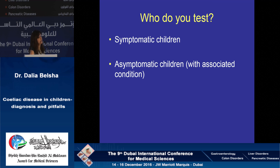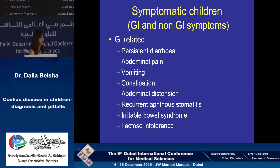Who do we test in kids with celiac disease? We test symptomatic children and asymptomatic children who have associated conditions that raise susceptibility for celiac disease. Symptomatic children is a very broad umbrella — each child with problems might be worth doing celiac disease serology for. From the GI perspective, symptoms include diarrhea, abdominal pain, abdominal distension, and the celiac crisis, which we don't see as much nowadays. Any GI symptoms, even lactose intolerance, should make you think about celiac disease.